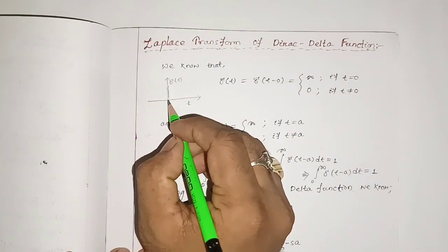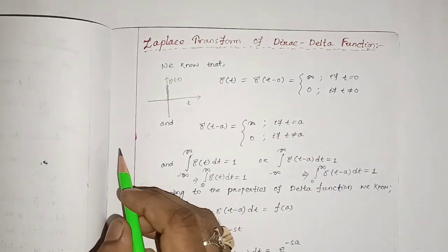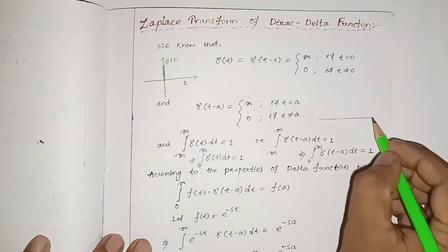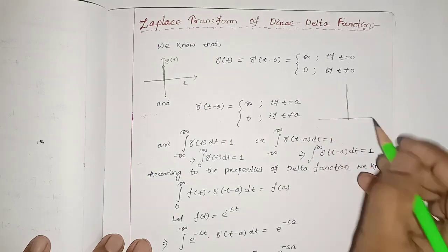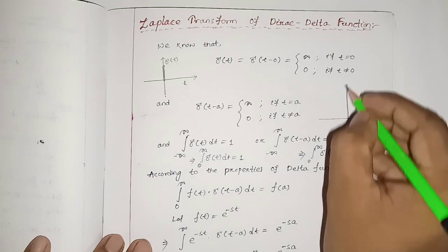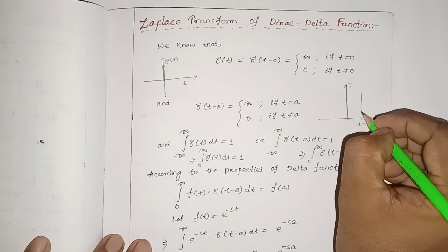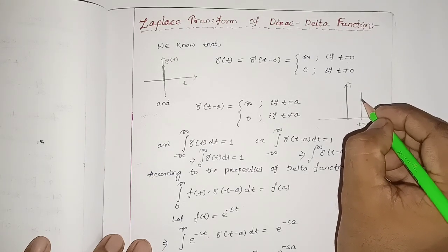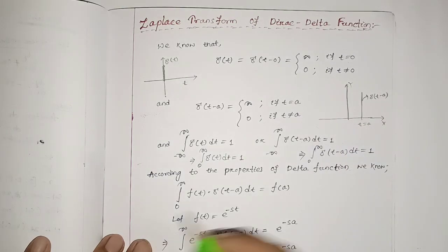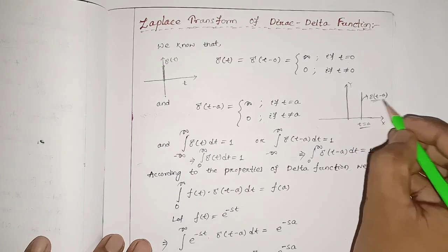Likewise, δ(t - a): if we draw this one, at t equal to a — suppose this is your t equal to a — this delta function exists and is named δ(t - a). Except at t equal to a, this delta function does not exist in the xy plane.